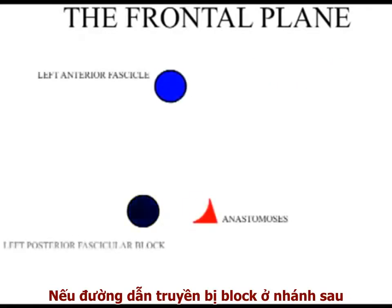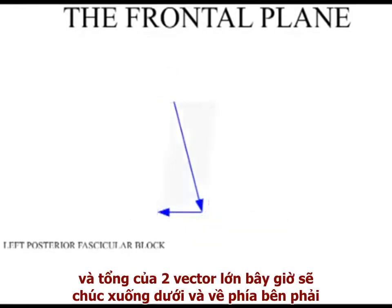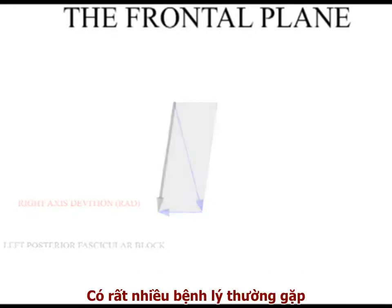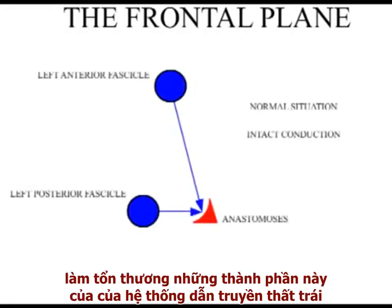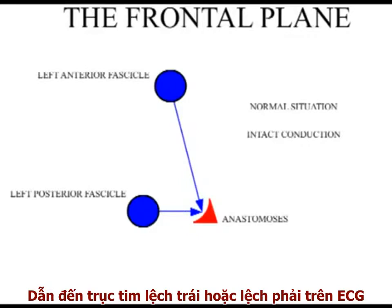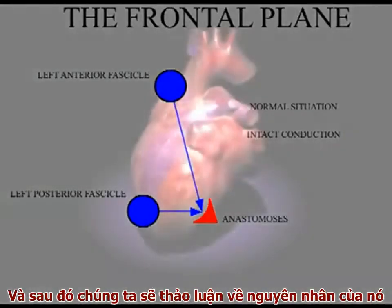With blocked conduction in the posterior fascicle, the inferior surface is depolarized by current flowing from above, and the sum of these two major vectors is now moving downwards and towards the right. This is termed right axis deviation. Many common diseases damage the distal components of the left ventricular conducting system, resulting in left or right axis deviation on the ECG. We will now go on to show you how to identify significant axis deviation, and we will then go on to discuss their causes.